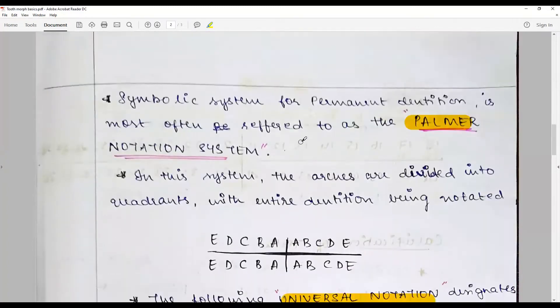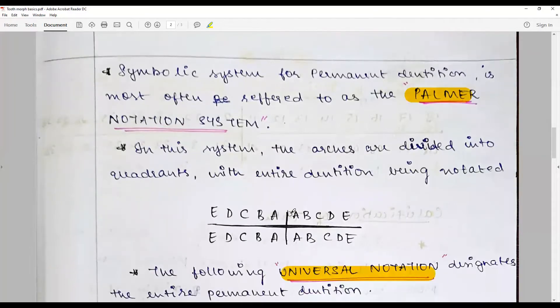Now we have a symbolic system called the Palmer system wherein we draw quadrants, each quadrant representing the maxillary right quadrant, maxillary left quadrant, mandibular left quadrant, and mandibular right quadrant. We are dividing the arch, maxillary and mandibular, into quadrants.